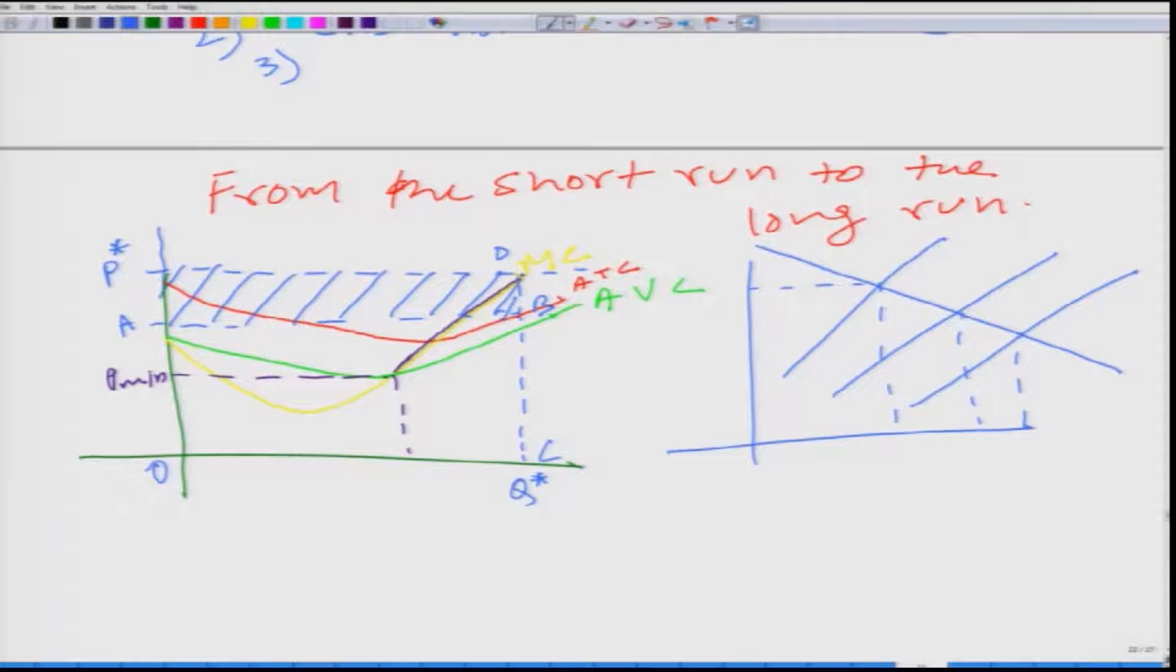So, market price comes down, it means there is a movement in this direction. The P star is the market price and it will decrease. And the new entrepreneurs will keep on entering the market as long as firms are making positive profit in this market.